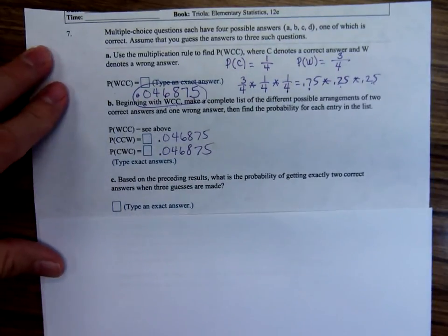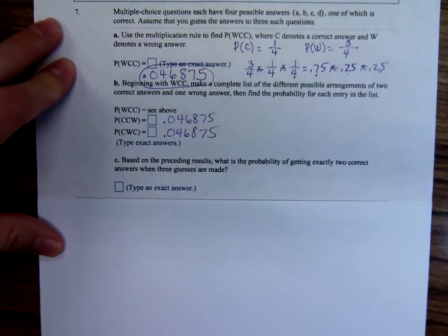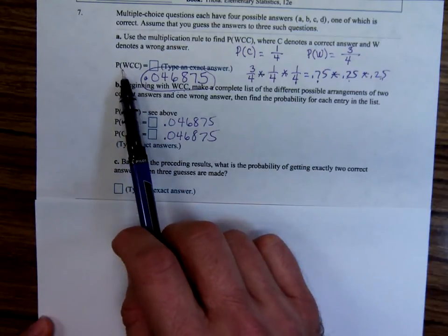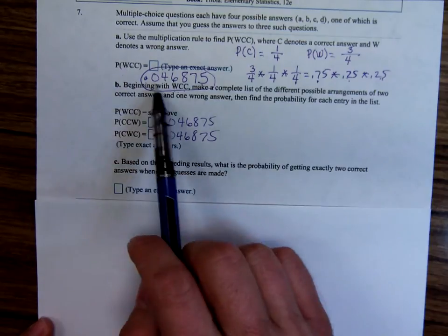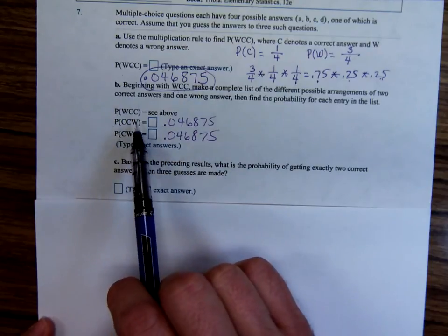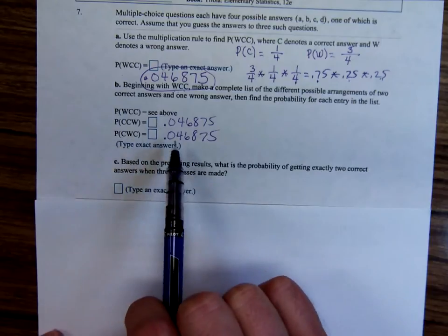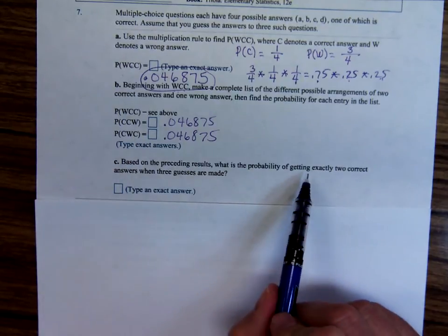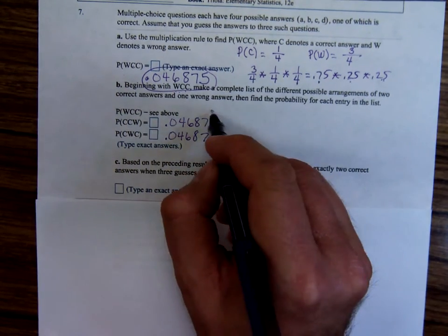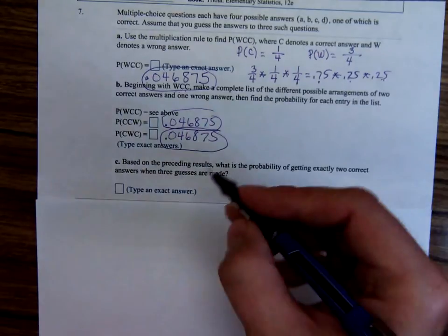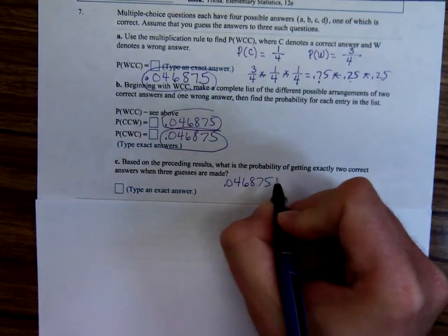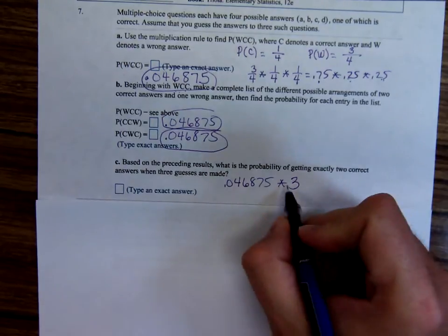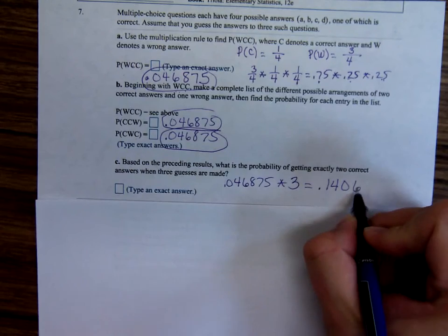Now, based on the preceding result, what's the probability of getting exactly two correct answers when three guesses are made? Well, the probability of getting the first one wrong, followed by the next two right, is 0.046875. That's also the probability of getting the last one wrong, but the first two right. And that's also the probability of getting the last one wrong, the first and third right. So to calculate the probability of getting exactly two correct, you just add up these three numbers, or we could just multiply by three. So 0.046875 plus 0.046875 plus 0.046875, or just multiply by three, and that'll be 0.140625.